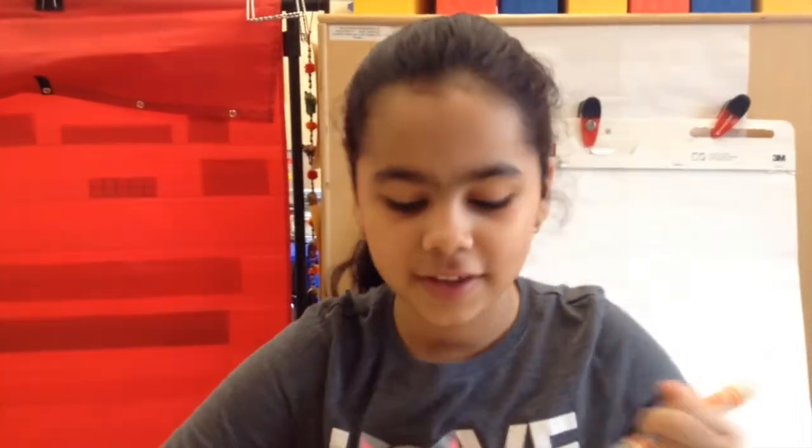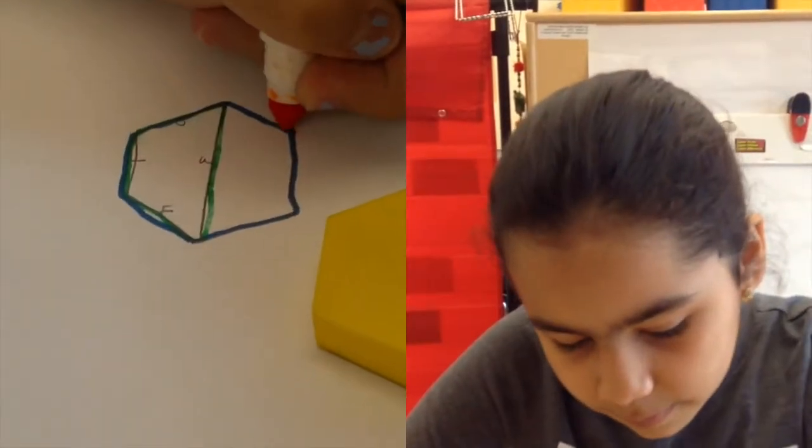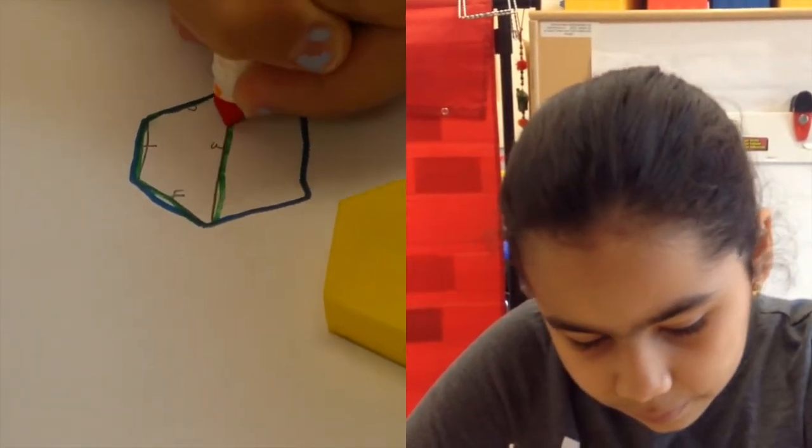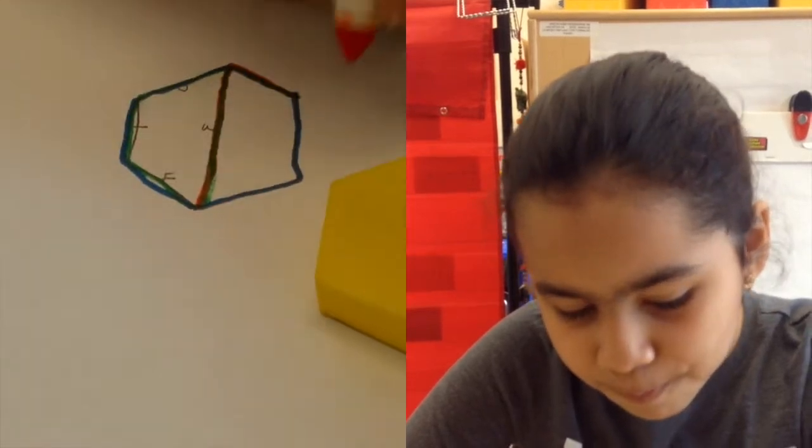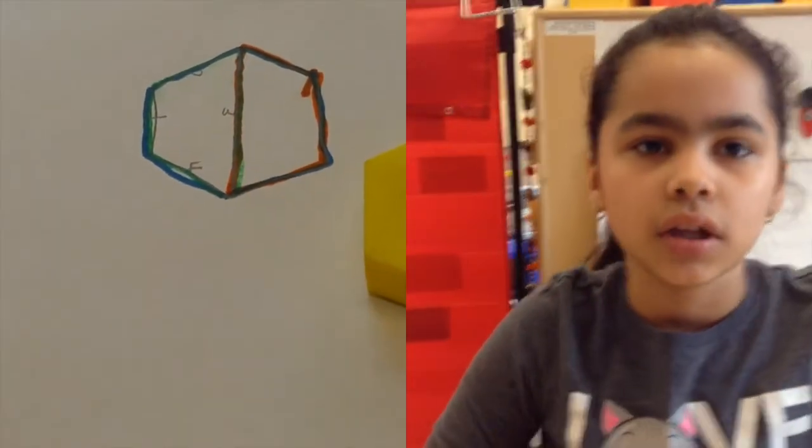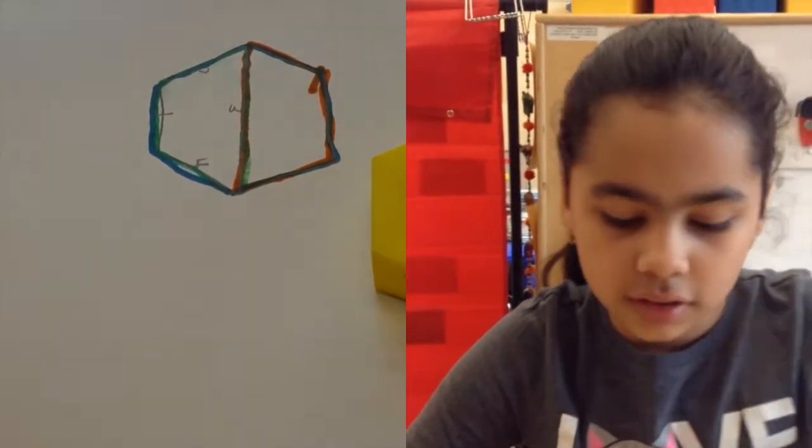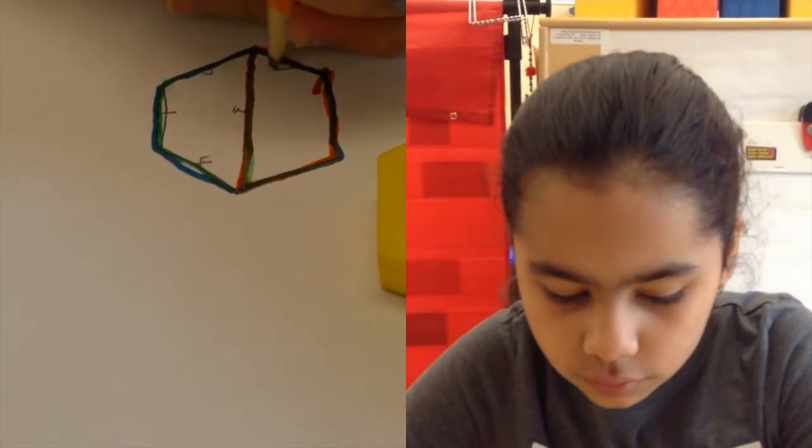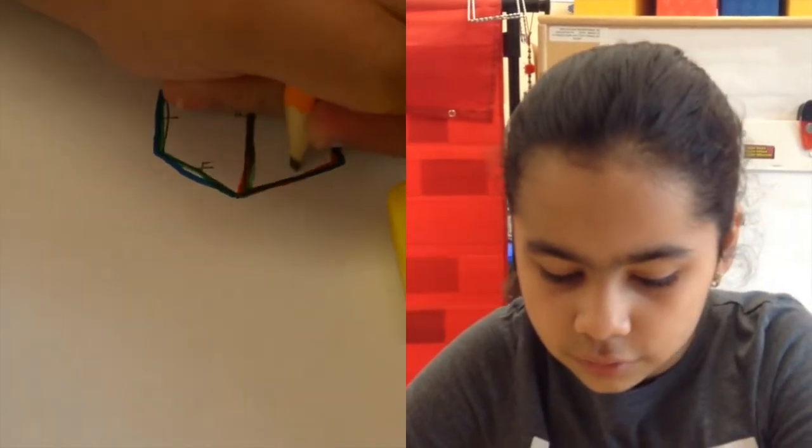Now we're going to use a totally different color. I'm going to give you orange. And I want you to trace the other trapezoid and count those sides. One. Two. Three. Four.